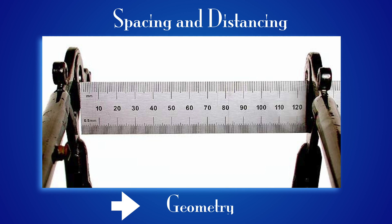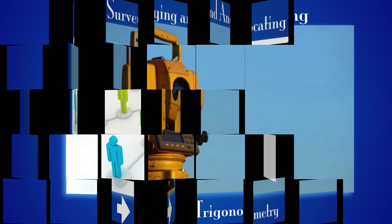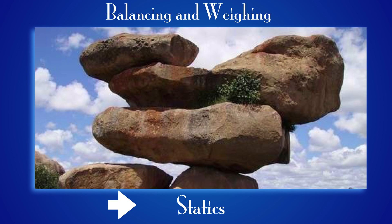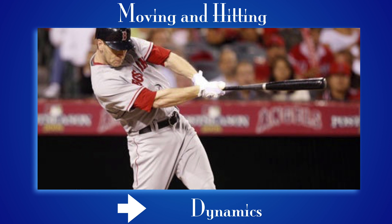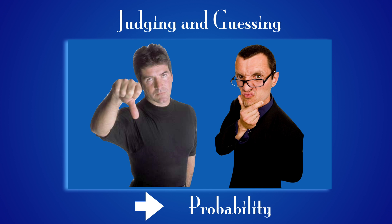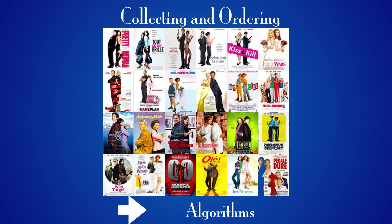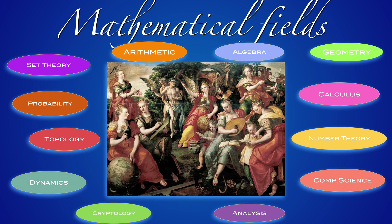We will follow this order more or less in this course — starting with arithmetic, then continuing with geometry and also covering topology. The trigonometry part is perhaps more part of geometry or calculus. Balancing and weighing is moved to analysis. Moving and hitting is dynamics — we have a course on dynamical systems and chaos. Judging and guessing will be probability theory. There will be a lecture about computer science and algorithms. Here are the mathematical fields we cover in the course — a more modern classification. From the eight we have gone to twelve lectures.